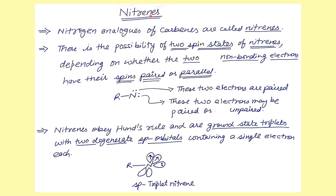What are nitrenes? Basically, these are the nitrogen analogs of carbene. Nitrenes have two possible spin states because nitrogen has two lone pairs of electrons. Depending on whether the electrons are paired or unpaired, they are classified as singlet nitrenes or triplet nitrenes.